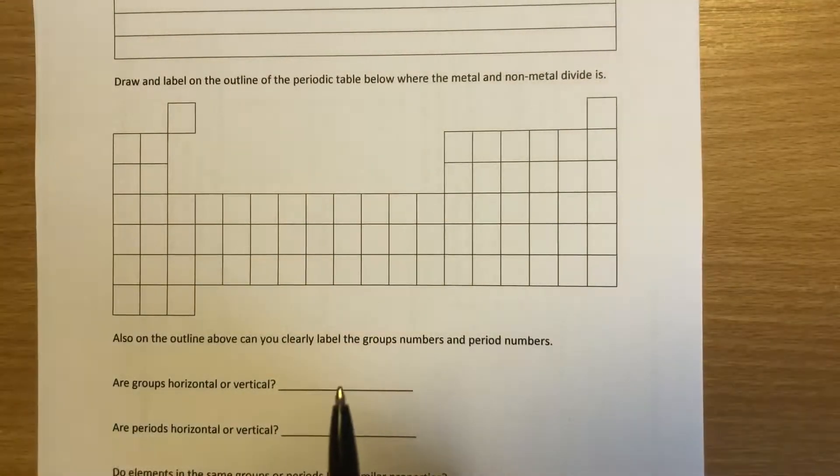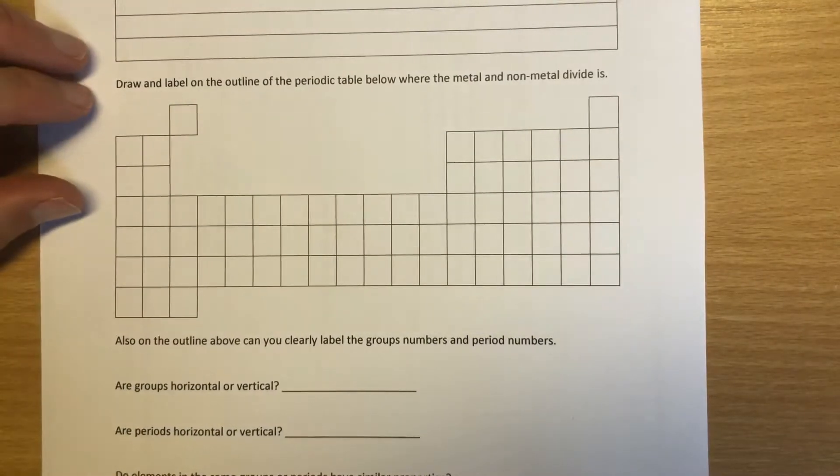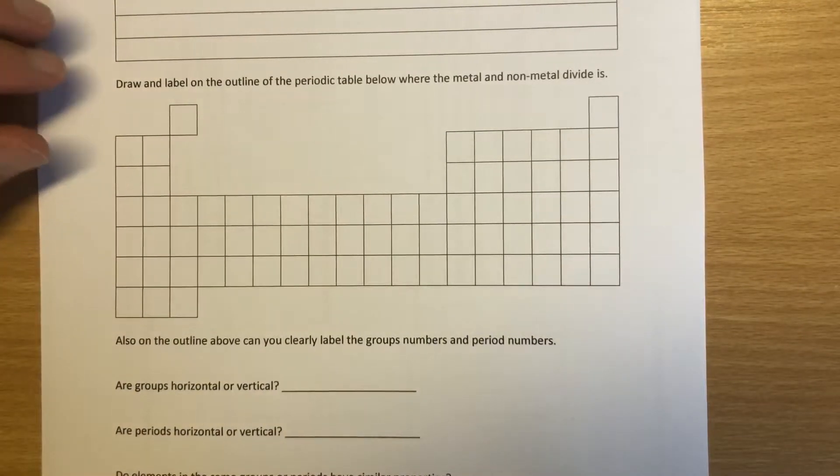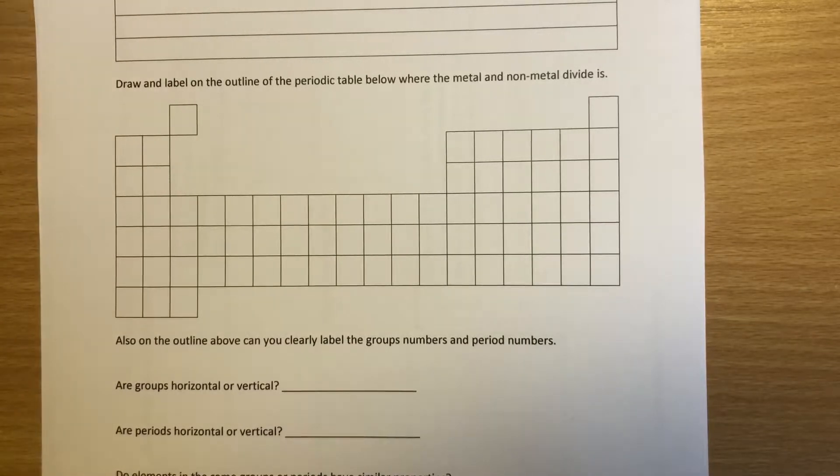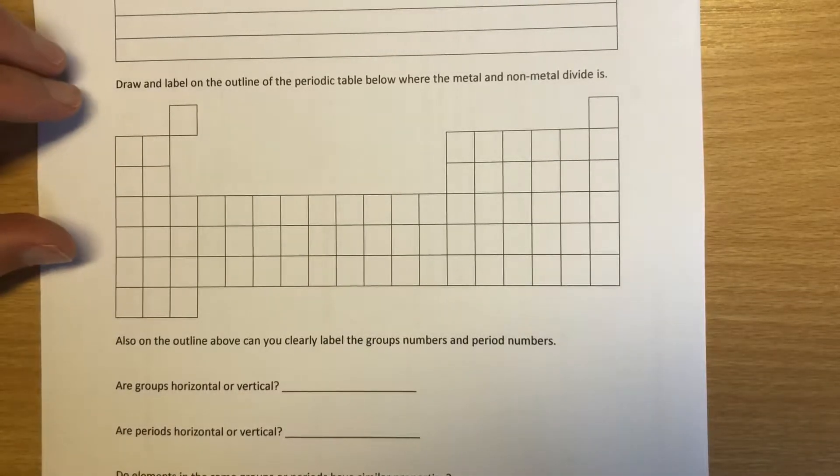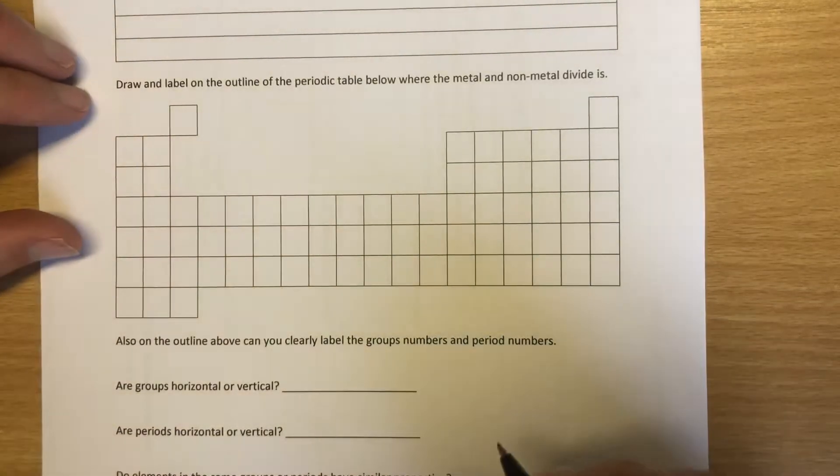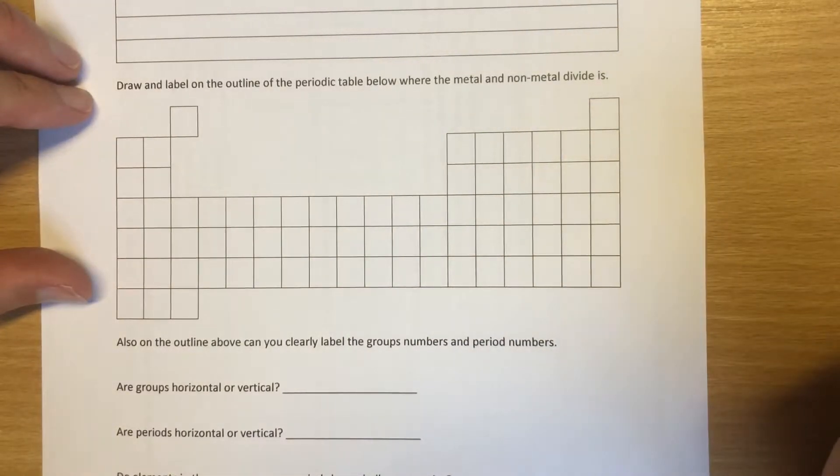Now the periodic table has a number of trends and patterns, and if we really understand it and use it well, it can help us immensely from predicting the properties of another element to working out the formula of a compound, whether something is a metal or a non-metal. So I've got an introduction on this page of the book, so let's quickly talk through this.